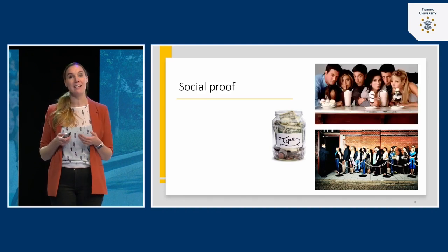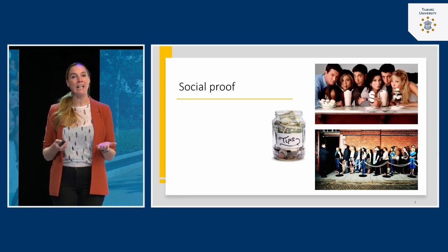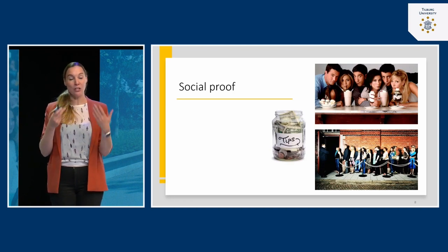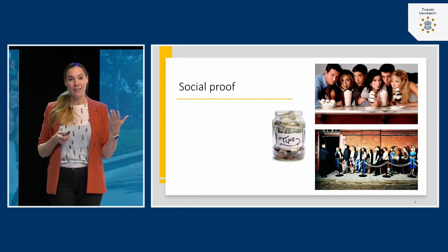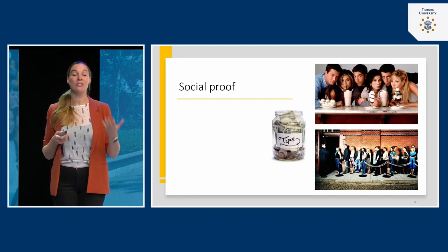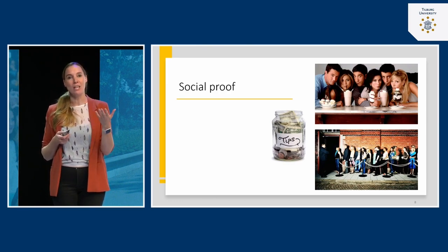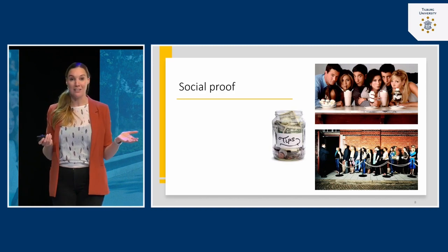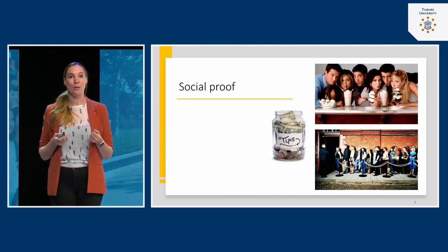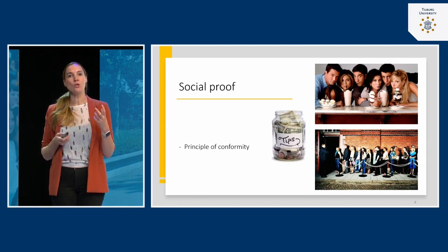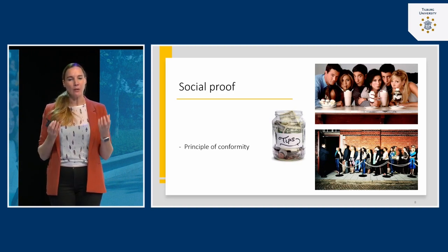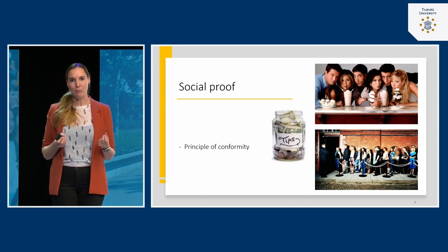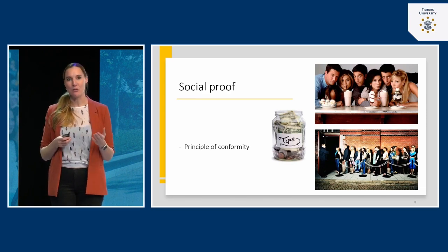Social proof is also used in television shows — especially old sitcoms like Friends, which used canned laughter. While watching, you heard people laughing, which is contagious. Research shows people find a comedy show more amusing when they already hear laughter, even if the jokes are exactly the same. Canned laughter is another example of social proof. This idea is all based on the principle of conformity, and both conformity and authority are very powerful psychological tools to influence people.